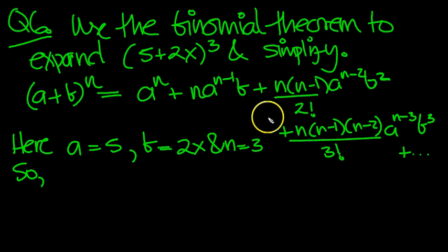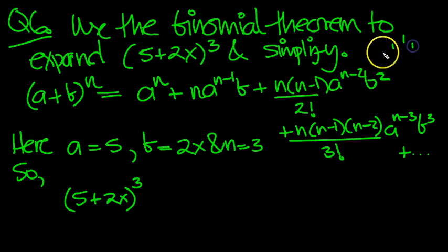So now, even though we've written down this complicated looking formula, it's quite easy to write down the constituent parts. We've got (5+2x) cubed. What can help us? I always like to write down my little Pascal's triangle. Here's the cube row - here's the coefficients of this expansion: 1, 3, 3, 1.